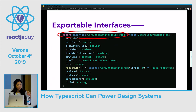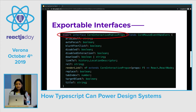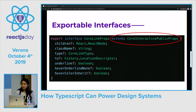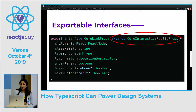You can also export interfaces, allowing similar components to share the same contracts, ensuring consistency. We've made an interface called Core Interactive Public Props for anything that would need to share link-related interaction design concerns. For our link component, we've extended the core link interface to include core interactive public props. So core link will get things like the title prop for free, with added props that we want to stay specific to core link, like underline.